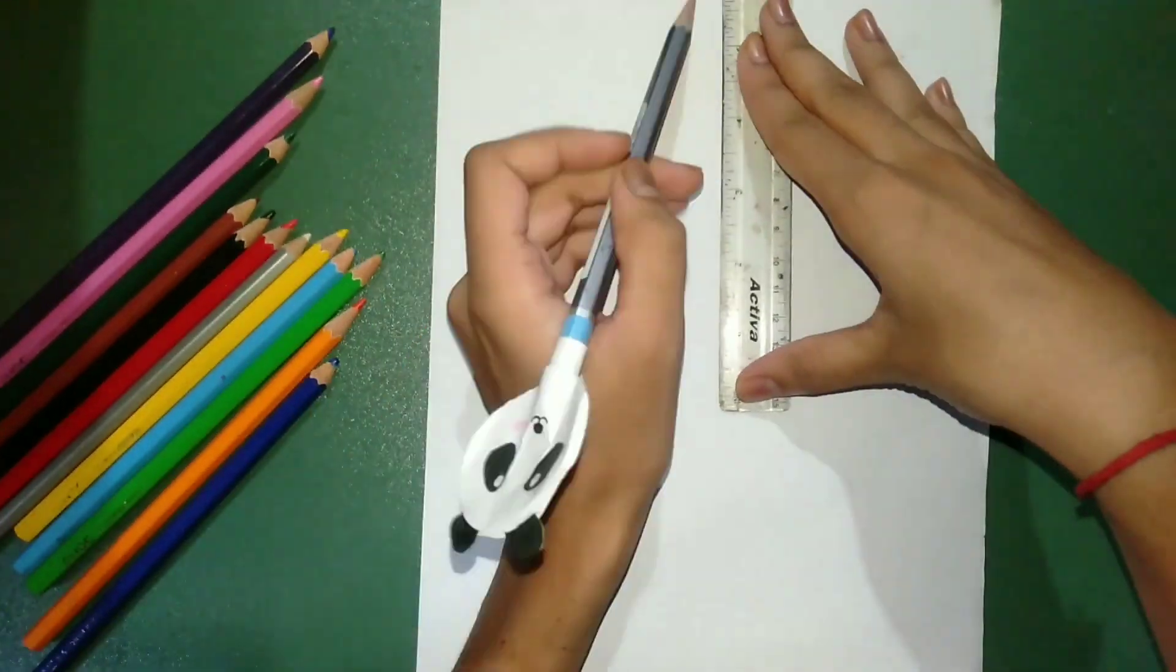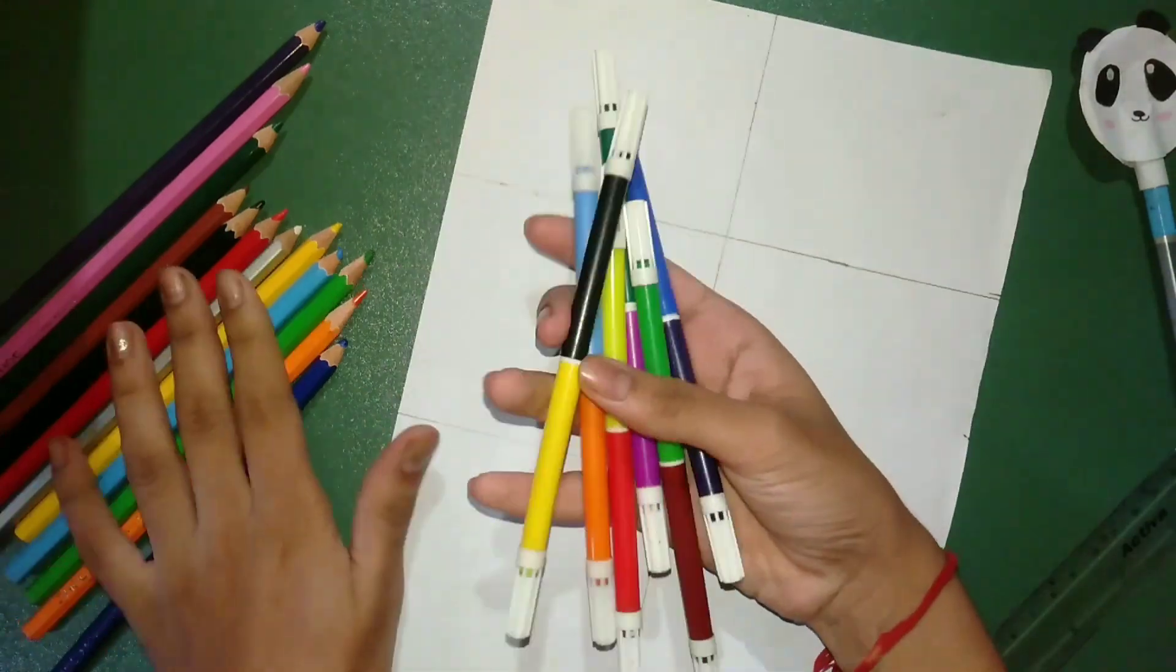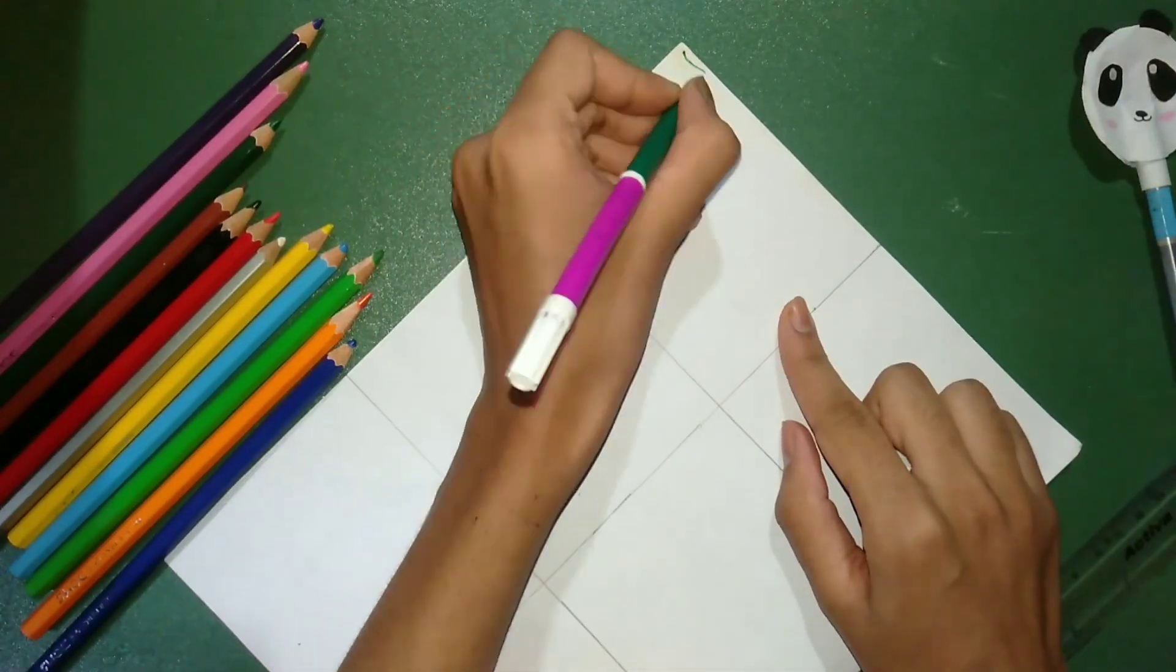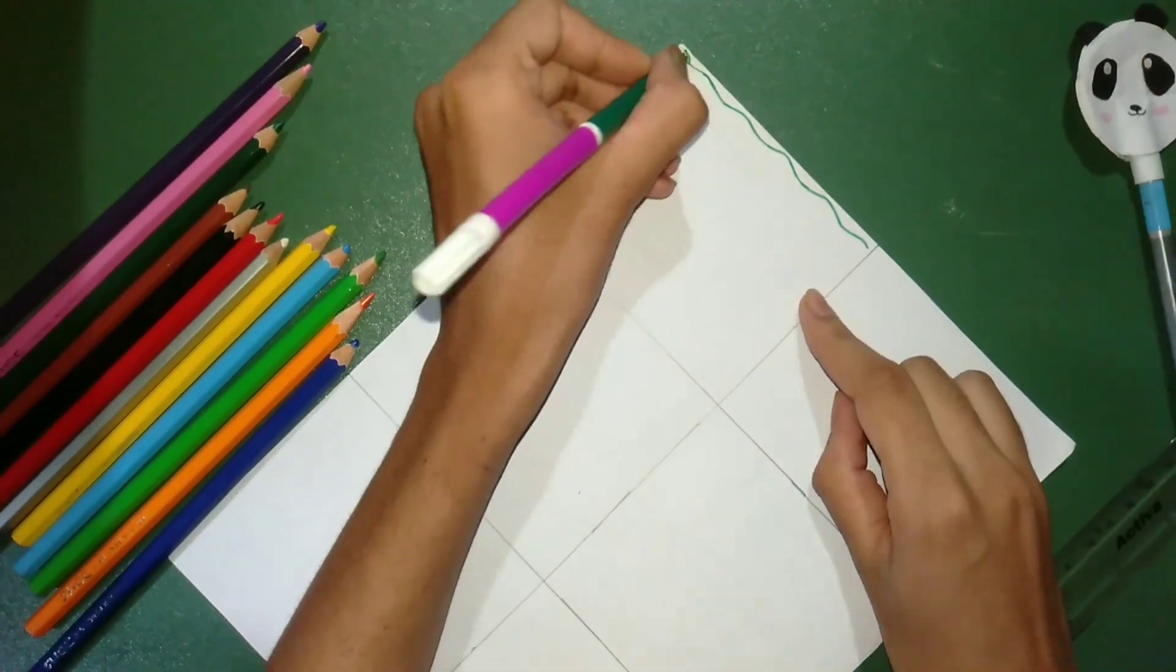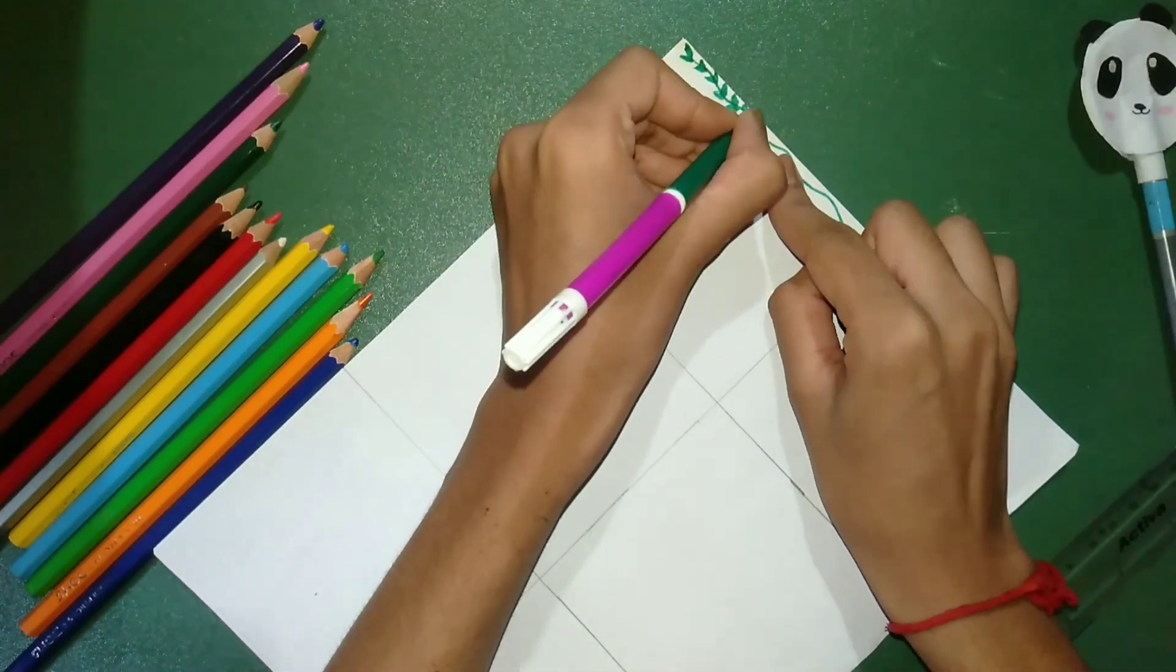Hello everyone, welcome back to another craft video. Today we will make name labels to stick on a notebook. You've got to divide them into equal parts, then you can make different themes. I have made leaves here. You can also make flowers too.